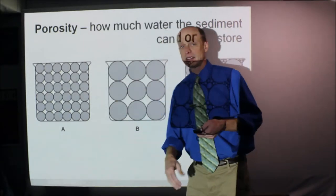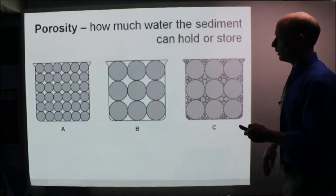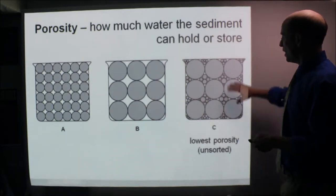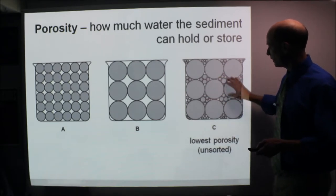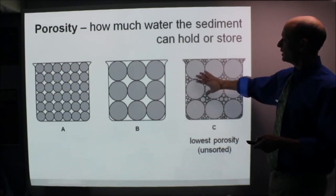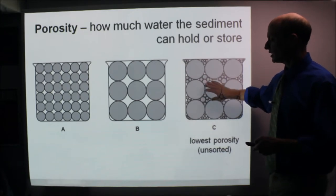Another way to look at porosity: this here is going to have the lowest porosity, the unsorted nature of it. All the smaller ones fit in between the larger ones. You can see there's much less white space here, so this is the lowest porosity of these three.